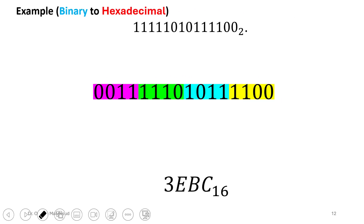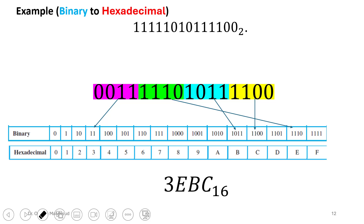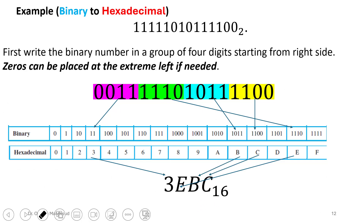For the next example, if you have only 10 binary digits, you add two zeros to the left to make groups of 4 — this makes no difference in binary. Then you look up each 4-digit group in the table to get the corresponding hexadecimal digit. This is how you easily convert binary to hexadecimal.